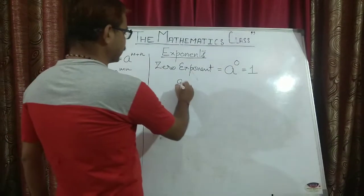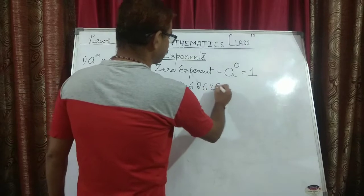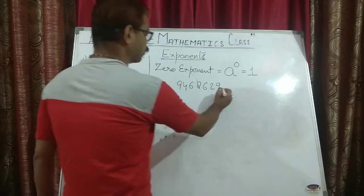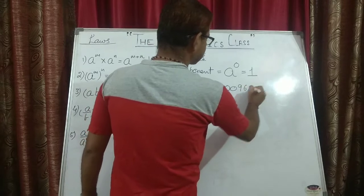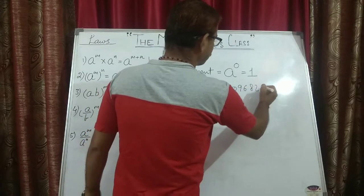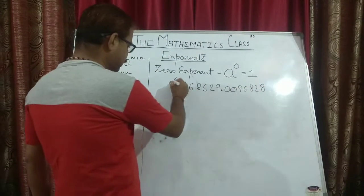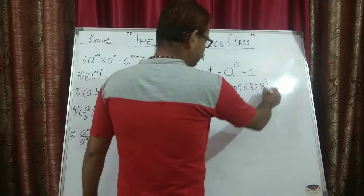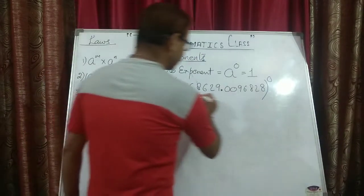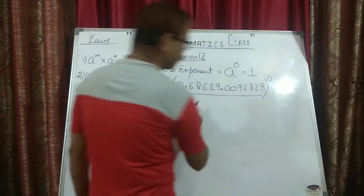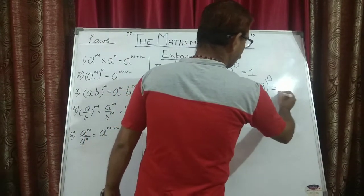You can take any number — 9, 4, 6, 8, 2, or even a decimal like 0.00968 — and raise it to the power zero. This number to the power zero will always be equal to one.